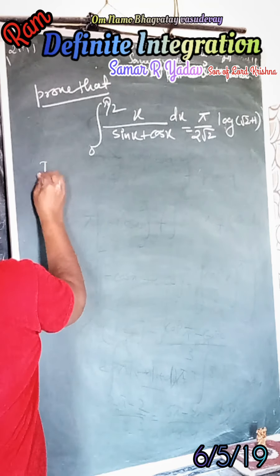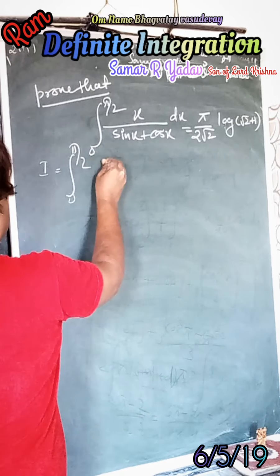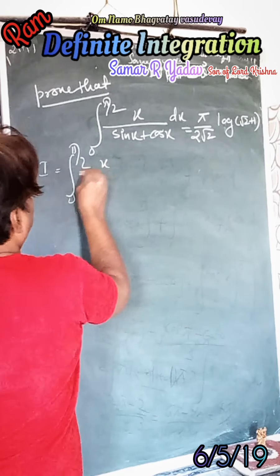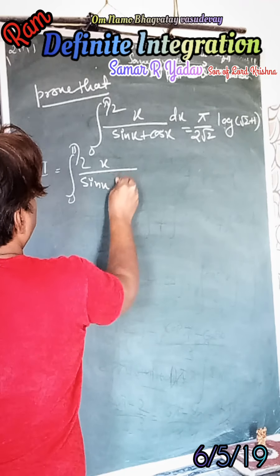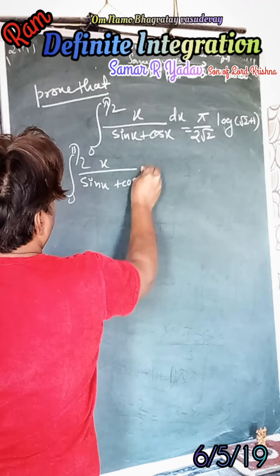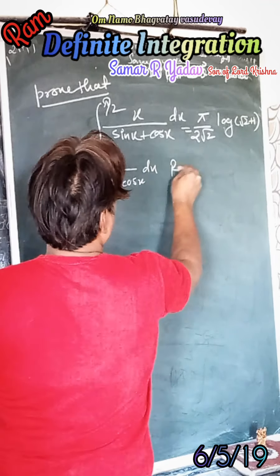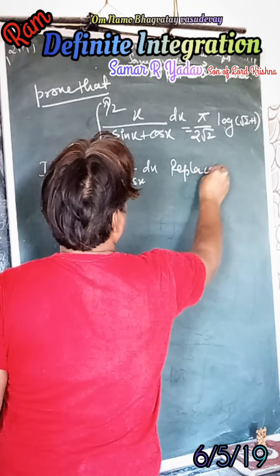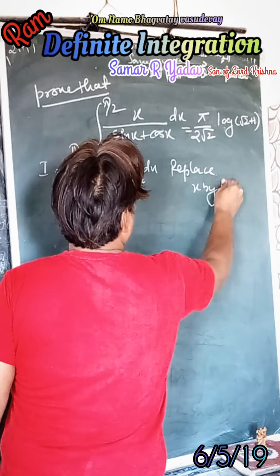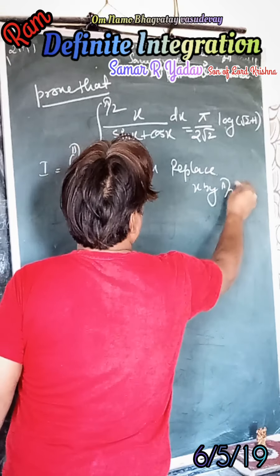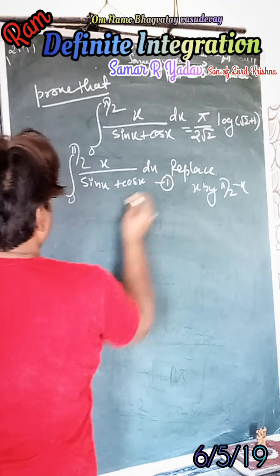Now here, let I equal the integral from 0 to π/2 of x/(sinx + cosx) dx. We will replace x by π/2 minus x. Suppose this is equation number 1.